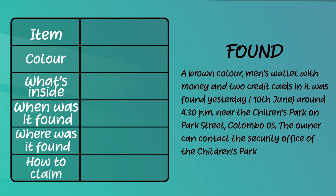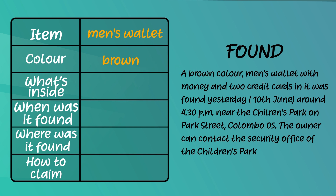First, you have to find the item. Can you see it in the notice? Yes, it's a men's wallet. The second column requires the colour of this wallet — yes, the colour is brown. The third column asks what's inside. There seem to be lots of things: money and two credit cards.